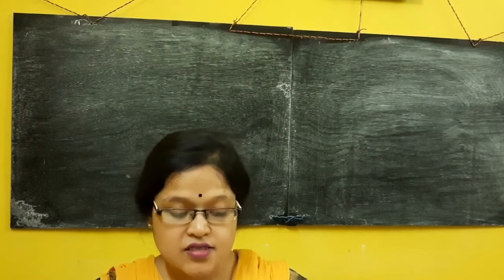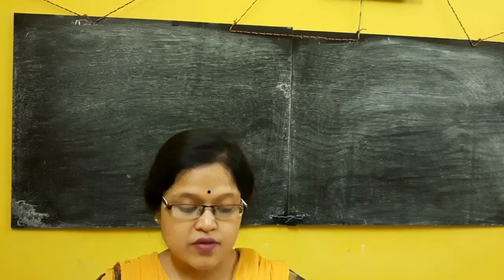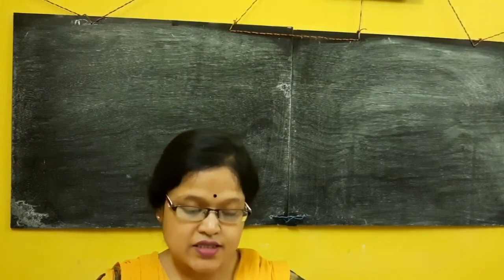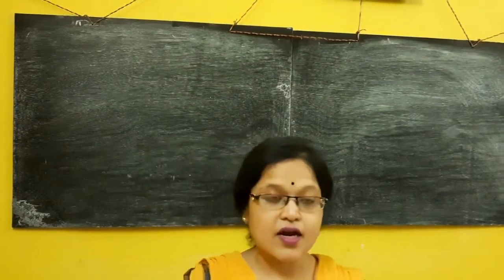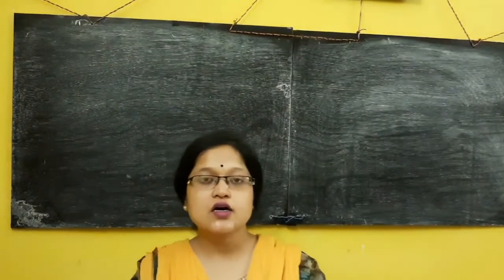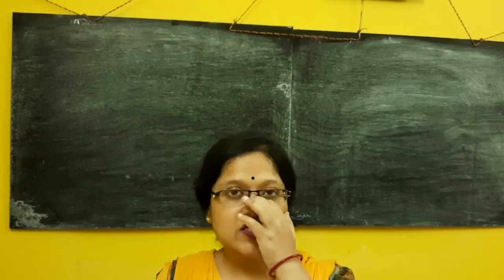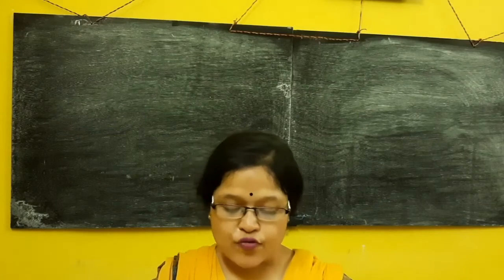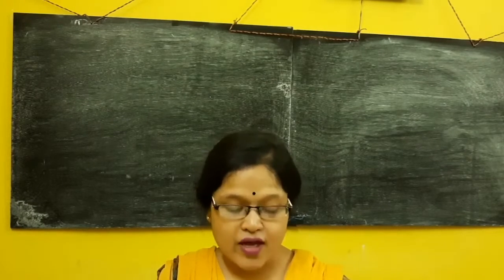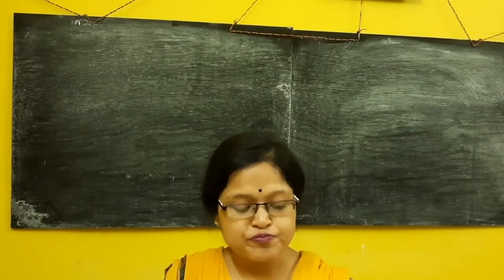An object is placed at a distance of 20 cm from a convex mirror, and the image formed by the mirror is 10 cm away from the mirror. State the magnification, position, and characteristics of the image. In a convex mirror, wherever you place the object, the size of the image will always be diminished and upright.